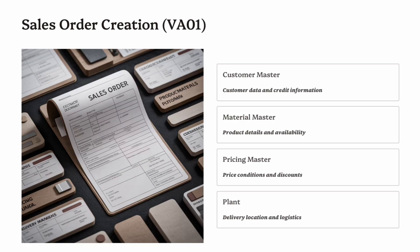When you create a sales order, SAP automatically pulls data from master records so you don't have to enter everything manually. For example, enter the customer number and SAP fills address and credit data; enter the material and SAP fills product description and pricing. The system then checks availability and credit limit automatically. Once the sales order is saved, it becomes the foundation for the delivery document and billing document later in the process. In real projects, the sales order is often referred to as the heartbeat of SAP SD, because every other document depends on it.